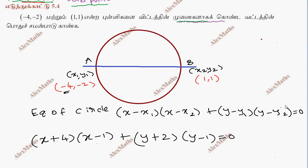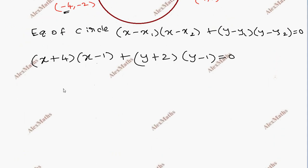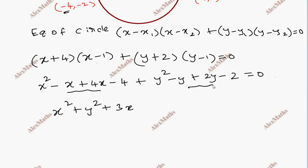Now expand, so this is x² minus x plus 4x minus 4 plus y² minus y plus 2y minus 2 equal to 0. This is grouping, first x² and y²: x² plus 3x plus y².